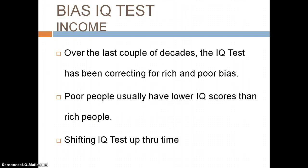Bias on the IQ test — income. Over the last couple of decades, the IQ test has been corrected for rich-and-poor bias. Poor people usually score lower IQs than rich people. A lot of people would think that makes sense — if you're rich, your IQ should be higher because you know how to work the system. But that's not entirely true. They've been fixing tests to fit the IQ of poor people. Rich people can buy more experiences, and the IQ test tests for those kinds of things — like knowing about caviar or jets. Poor people don't have those things, so that has been causing the IQ test scores to skew upward for higher-income groups.